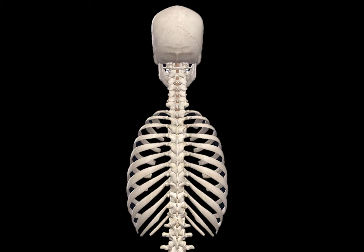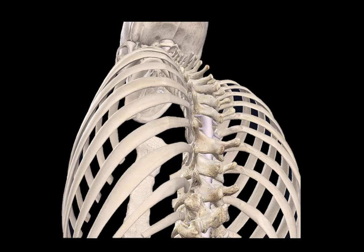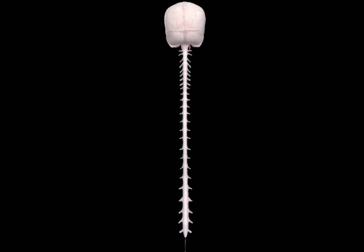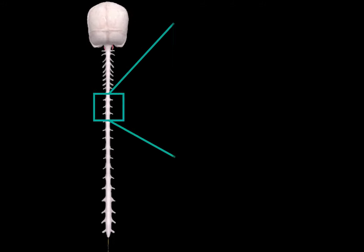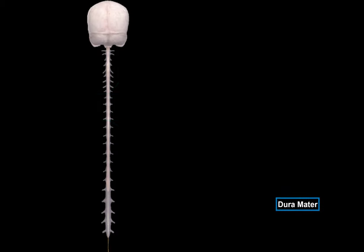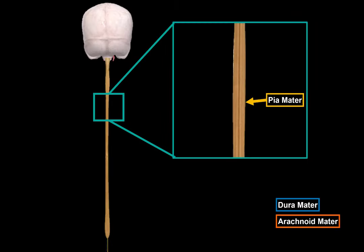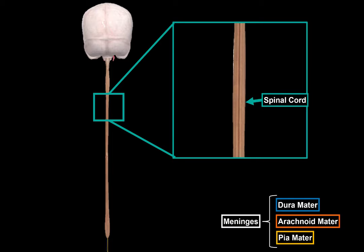Here we see a posterior view of the vertebral column. If we remove one vertebra and zoom in, you will see the spinal cord going through the vertebral canal. The spinal cord is covered by a meningeal layer called the dura mater. If we remove the dura mater, you'll find the arachnoid mater. And if we remove that, you'll see a very thin and delicate connective tissue called the pia mater. These three are what we call the meninges, and they cover the whole central nervous system. We'll go through the meninges in a separate video.